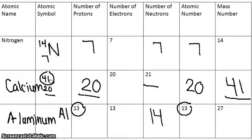You can also fill in your atomic symbol. Your mass number always goes at the top, so you have 27, and your atomic number always goes at the bottom, so you have 13. Hopefully that helped you with reading your periodic table and figuring out the atomic symbols.